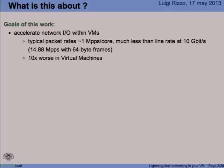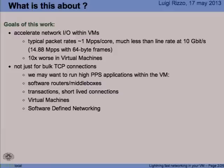So what is this work about? What are our goals here? First of all, we wanted to accelerate the network I/O within virtual machines. The typical packet rates you can achieve on FreeBSD are about a million packets per second per core, and much less than line rate at 10 gigabit per second. This is on bare metal, on real hardware. In a virtual machine, performance is 10 times worse, possibly even more, at least on FreeBSD. We wanted to find a solution to close the gap between these two performance levels.